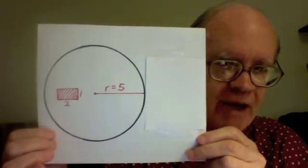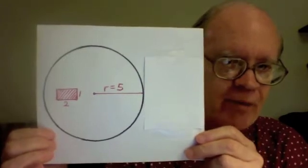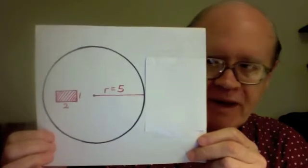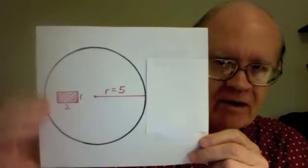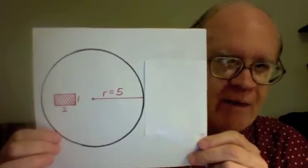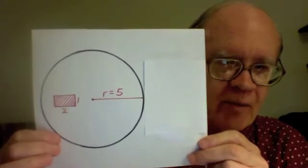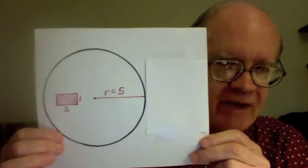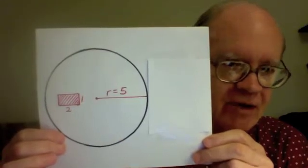The answer will be a fraction that will mean part over total. The part, the top number, being the area of the little rectangle, and the denominator, the total number, that will be the bottom number of the fraction, being the area of the entire circle.